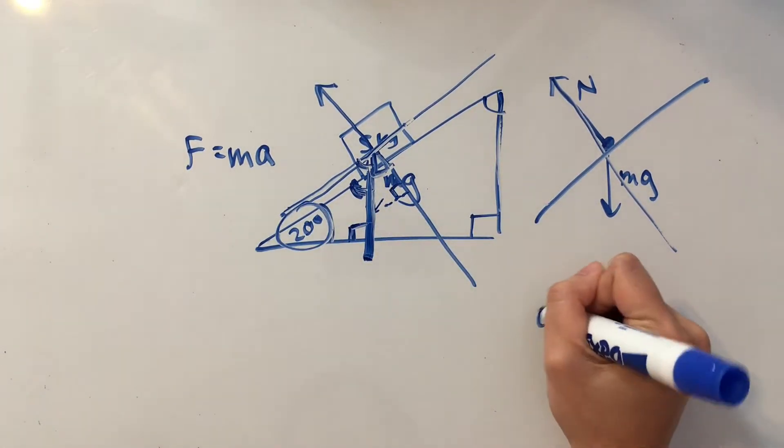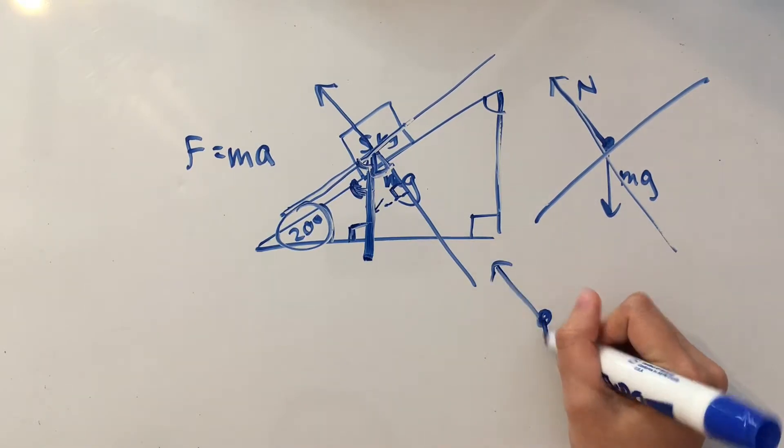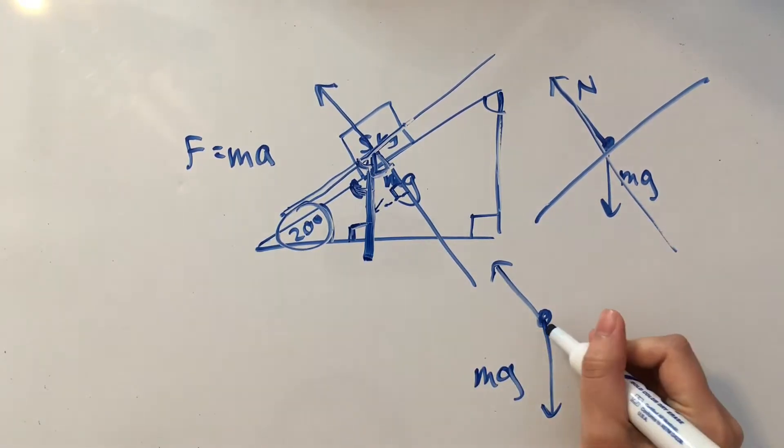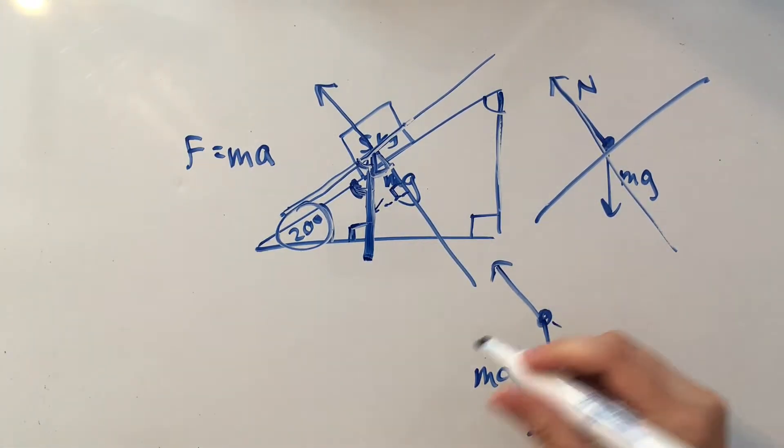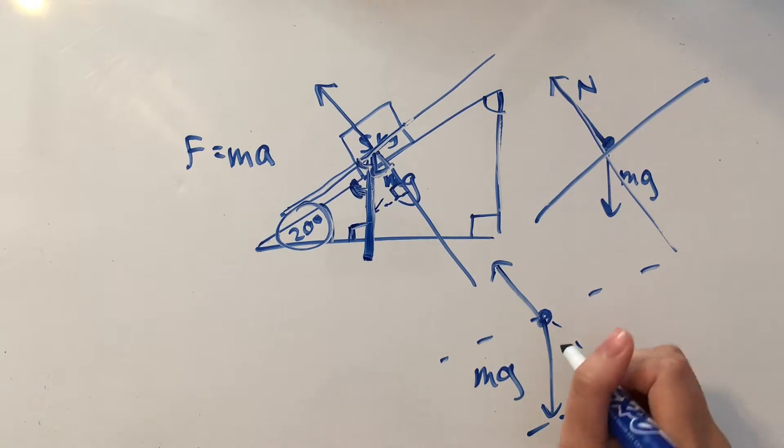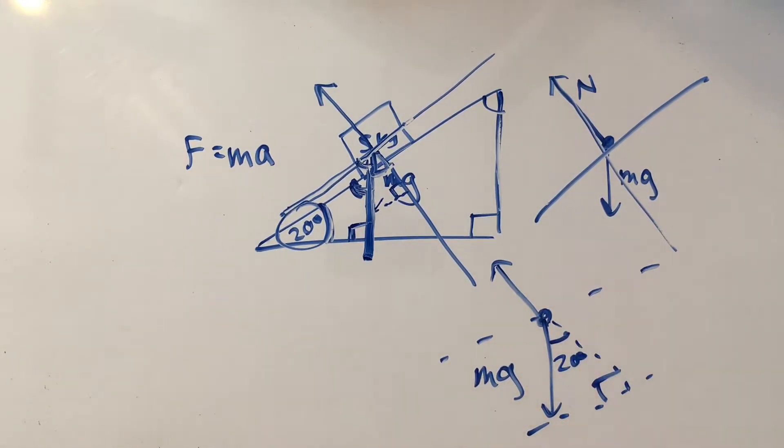So we have our mg here. And this is the new triangle that we drew out. And we have our 90 degrees, because this side is going to be parallel to our new x-axis. So we said that this angle is equal to the incline, which is 20 degrees.